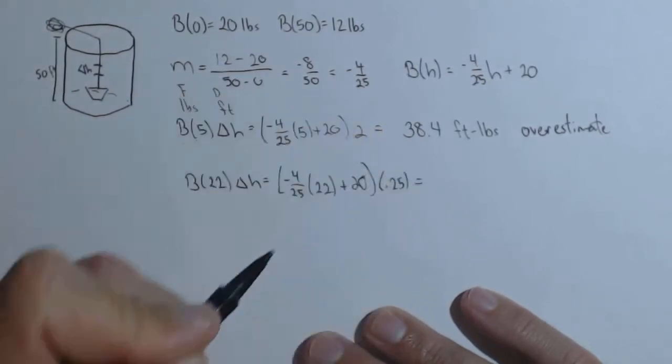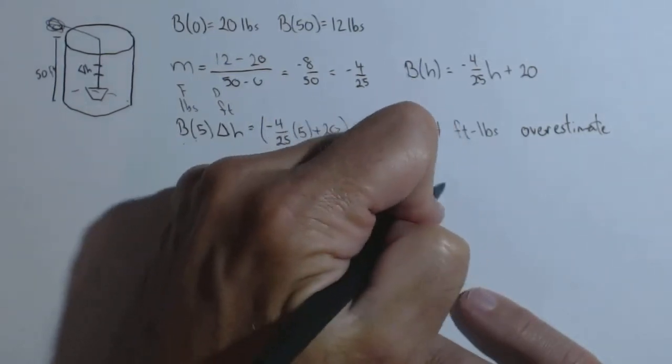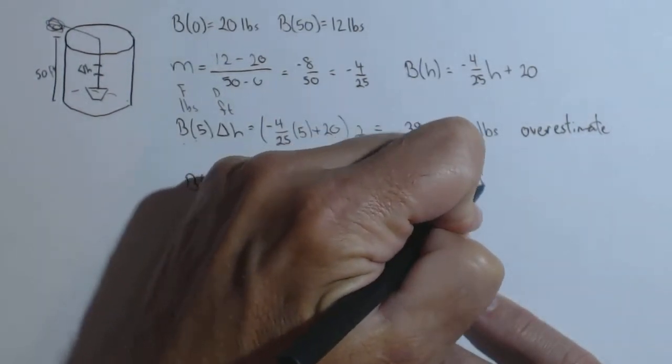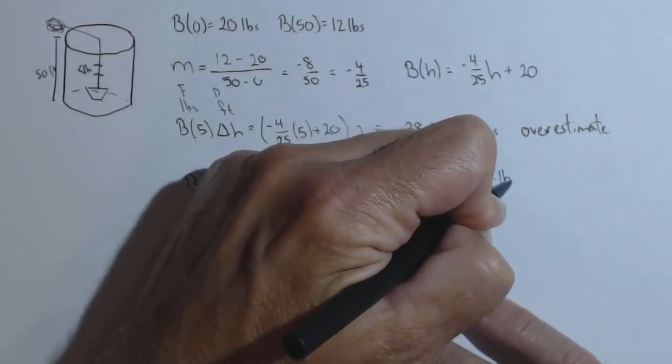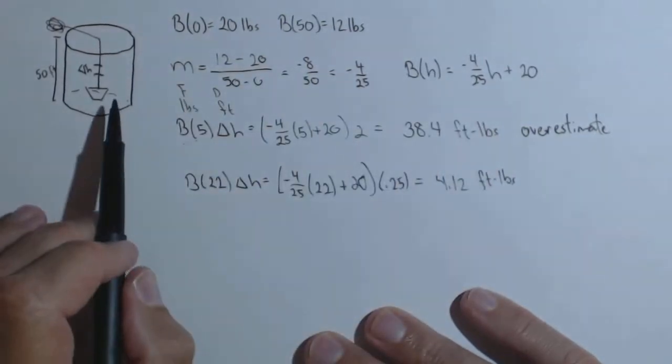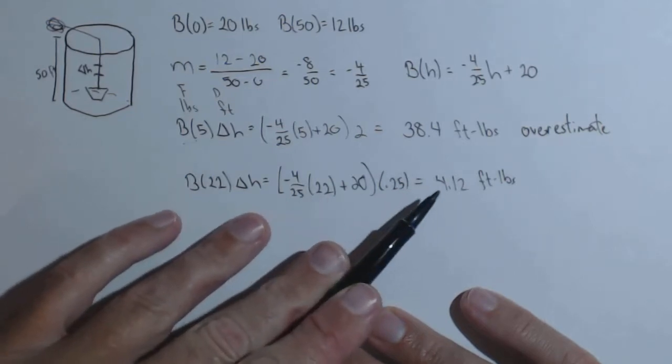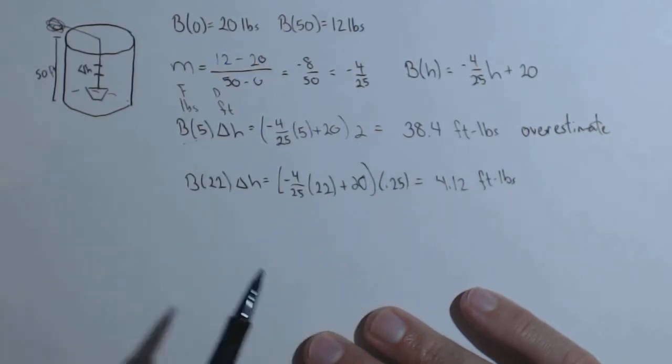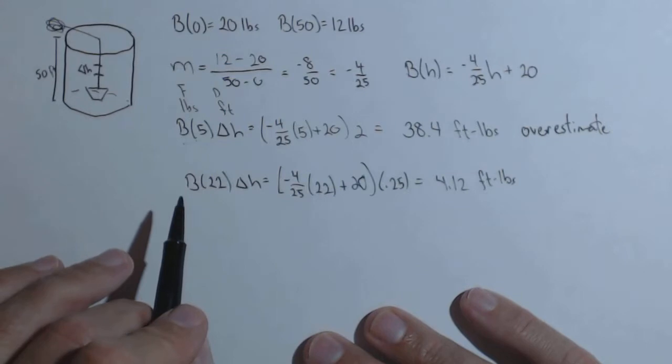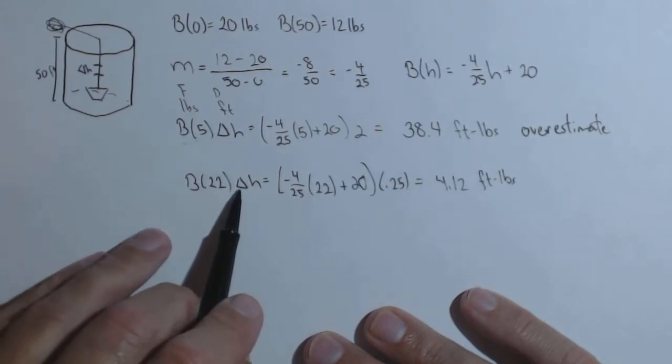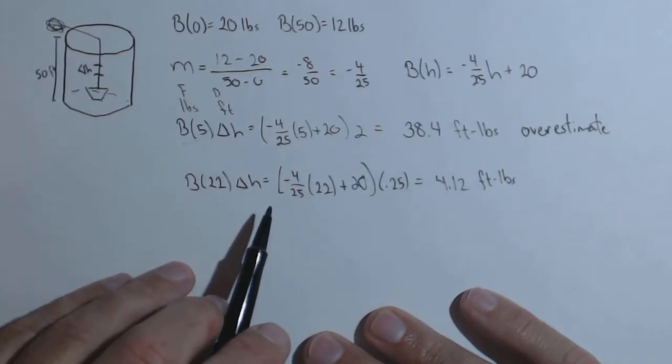So we're only moving a quarter of a foot this time. If you calculate that, you get 4.12 foot-pounds of work to move our system from 22 feet to 22 and a quarter feet. Again, this is going to be a slight overestimate. But what you should see is as delta h gets smaller, we're getting a better estimated work.